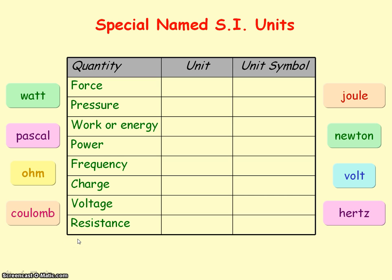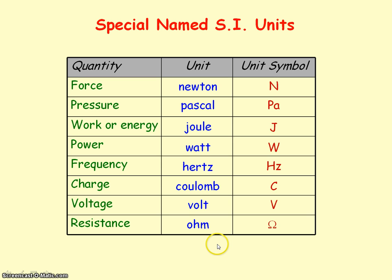Some quantities have units with special names, usually the names of scientists. It's important to note that these units named after people have capital unit symbols — so N for Newton, P for Pascal, and so on. The symbol for ohm is capital omega (Ω).